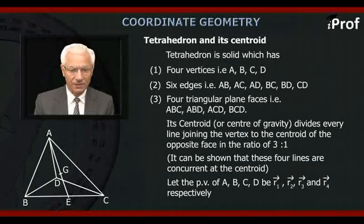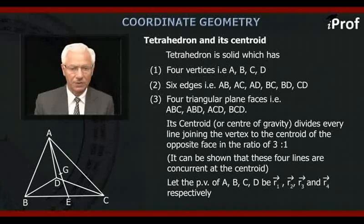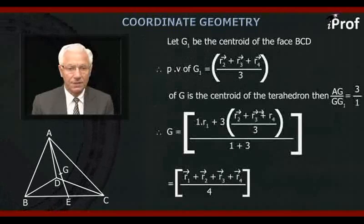Let the position vector of A, B, C, D be R1, R2, R3, and R4 respectively. Let G1 be the centroid of the face B, C, D.